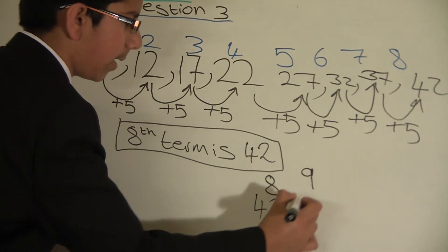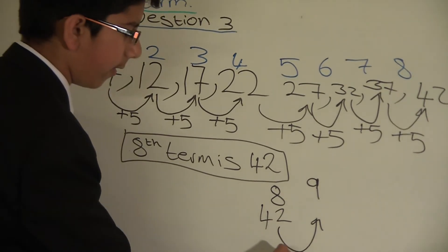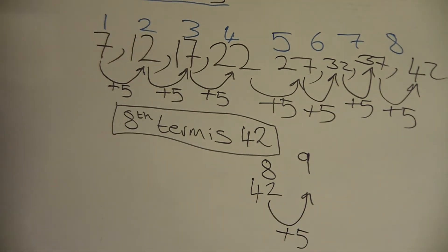This is going to be number 9. And 42 plus 5, we get 47.